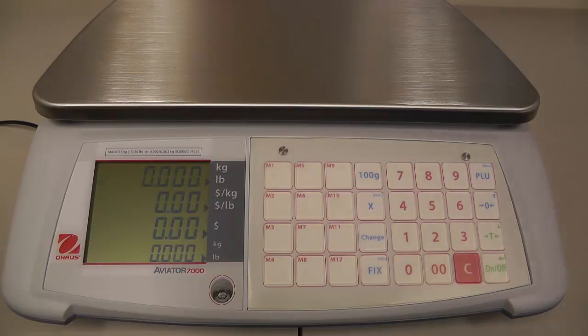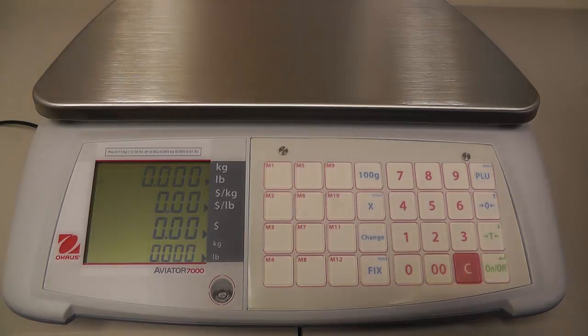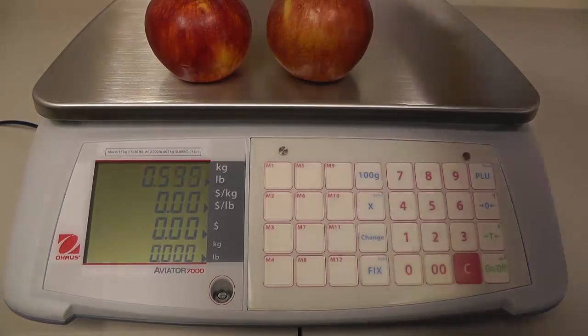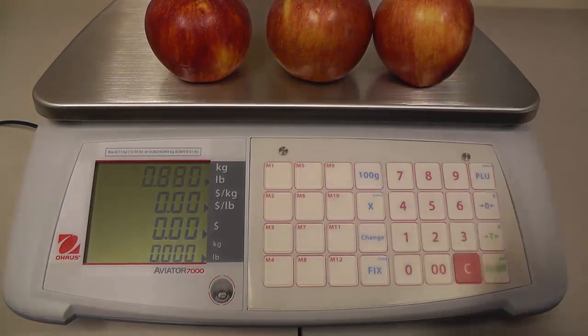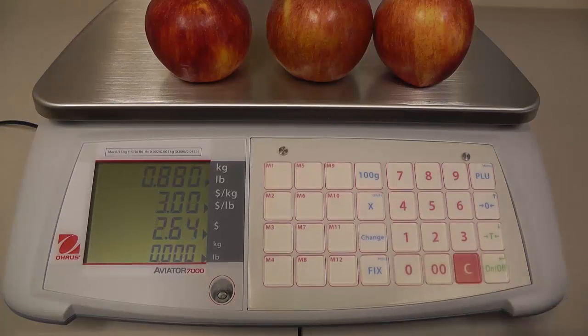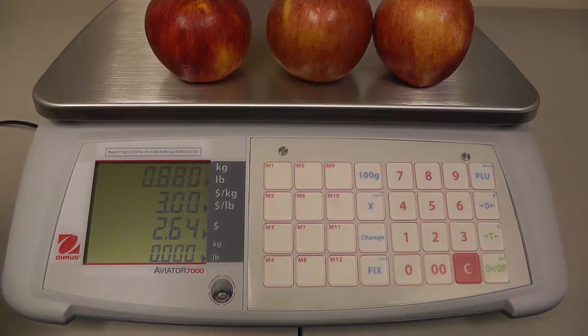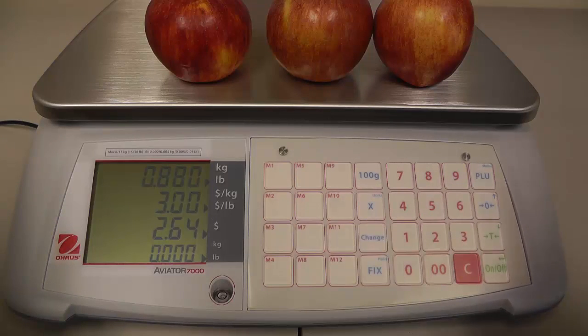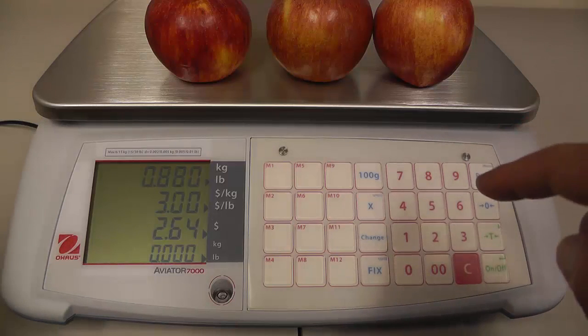To do this we'll just go ahead and pretend we're doing a transaction, so we'll put a couple apples up here. We'll say they're three dollars a pound, so the transaction is two dollars and 64 cents. Now the customer needs to pay you for the apples, so we press the change button.